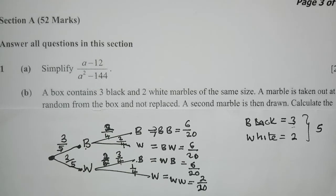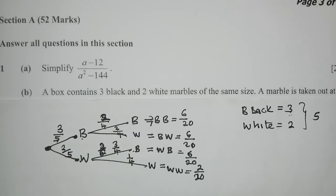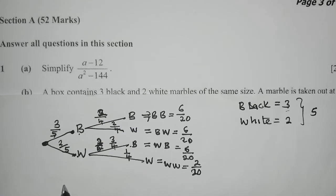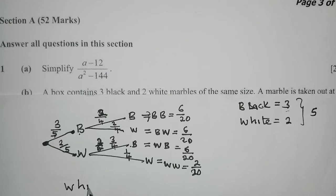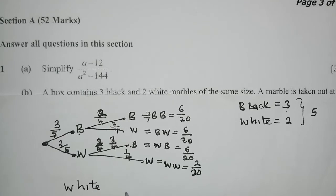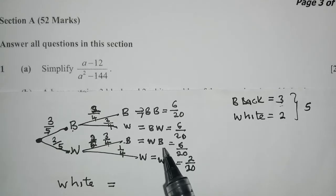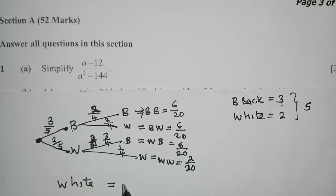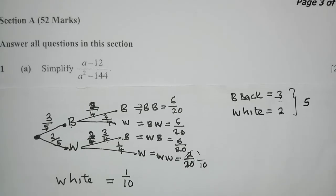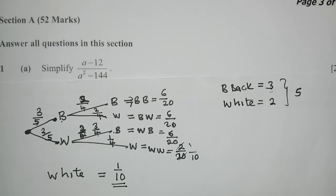The probability of picking white, white would be equal to two over 20, because two times one is two, five times four is 20. In the first question, they said picking white, white. The probability of picking white would be one over 10, because two into one, 20 into 10. This is one over 10, and this is our solution.